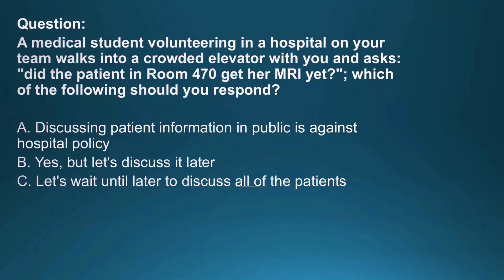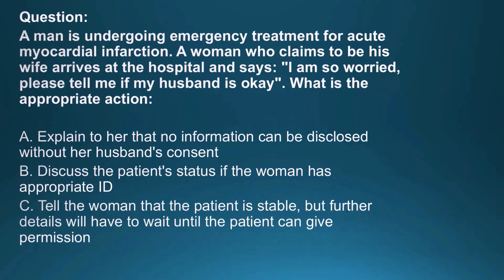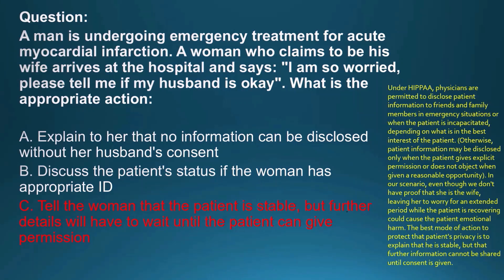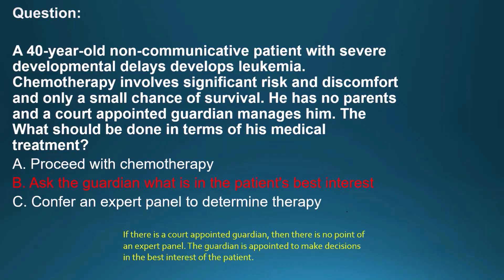A medical student in a crowded elevator asks about a patient in room 470. You should respond: let's wait until later to discuss all the patients. A man undergoing emergency treatment for acute myocardial infarction — a woman claiming to be his wife asks if he is okay. Tell the woman that the patient is stable, but further details will have to wait until the patient can give permission. A 40-year-old non-communicative patient with severe developmental delays develops leukemia; chemotherapy has huge risks and only a small chance of survival. Ask the guardian what is in the patient's best interest.